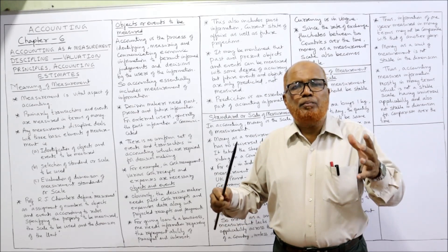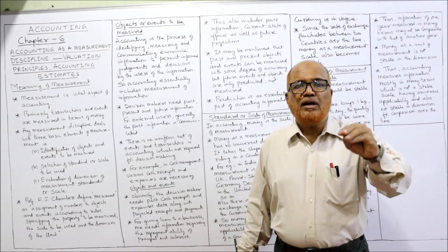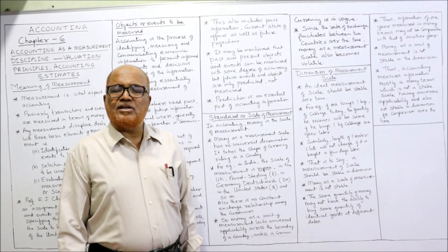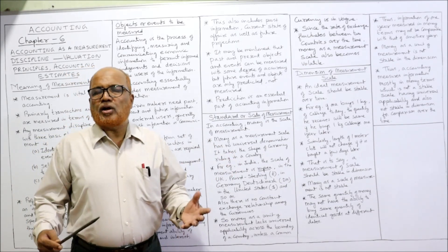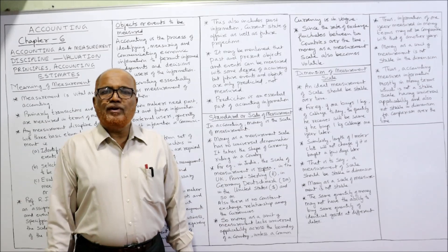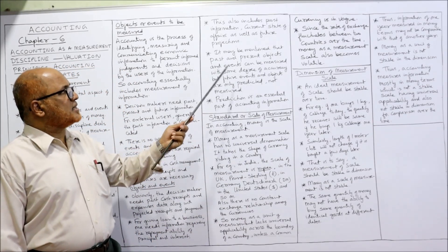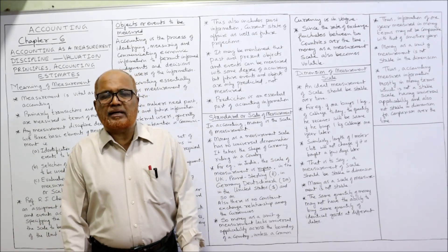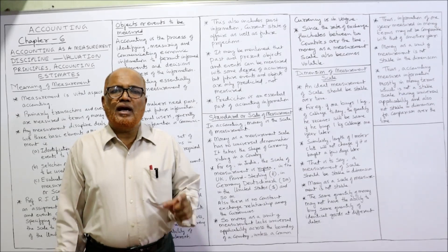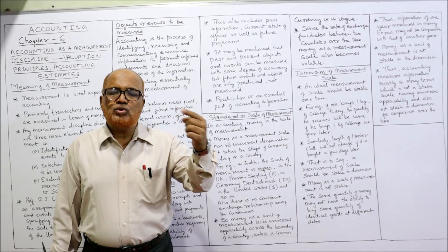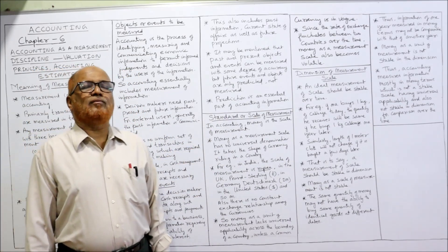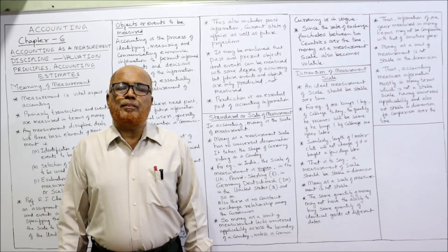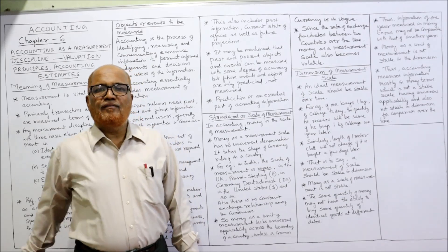All this information should be identified, measured, and communicated. This includes past information, current state of affairs, and future projections. The decision maker does not require only past information, as the past may not repeat in the future. Past and present objects can be measured with some degree of accuracy, but regarding future transactions we can only estimate. Prediction is now an essential part of accounting information — accounting also requires projections about the future.